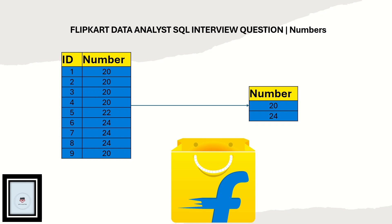Greetings everyone, welcome back to my channel Data Sculptor. Today we are going to cover another interesting SQL question which is asked in the Flipkart Data Analyst SQL interview. The question is: you have a table called sequence_numbers where you have the columns ID and number, with some consecutive IDs and numbers placed in it, and you need to return a specific output from the input table.